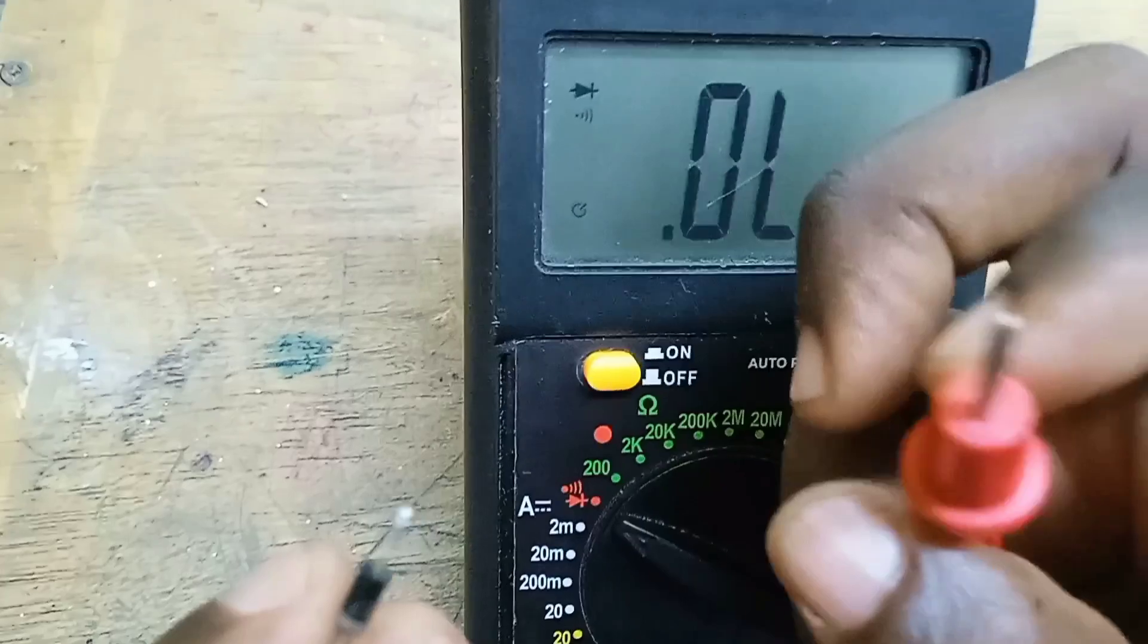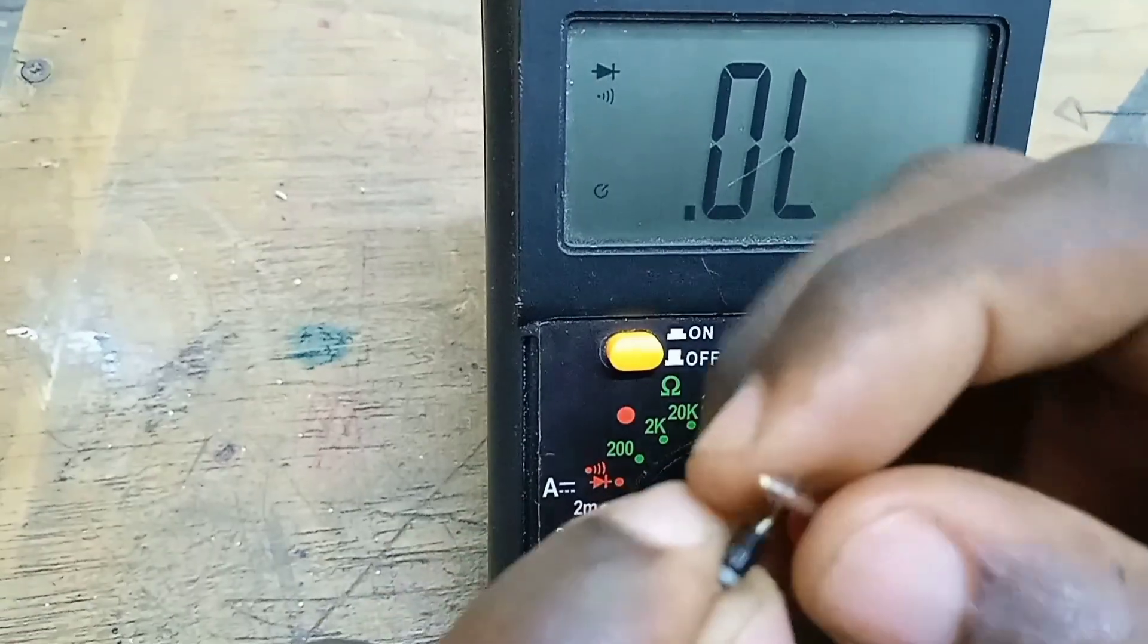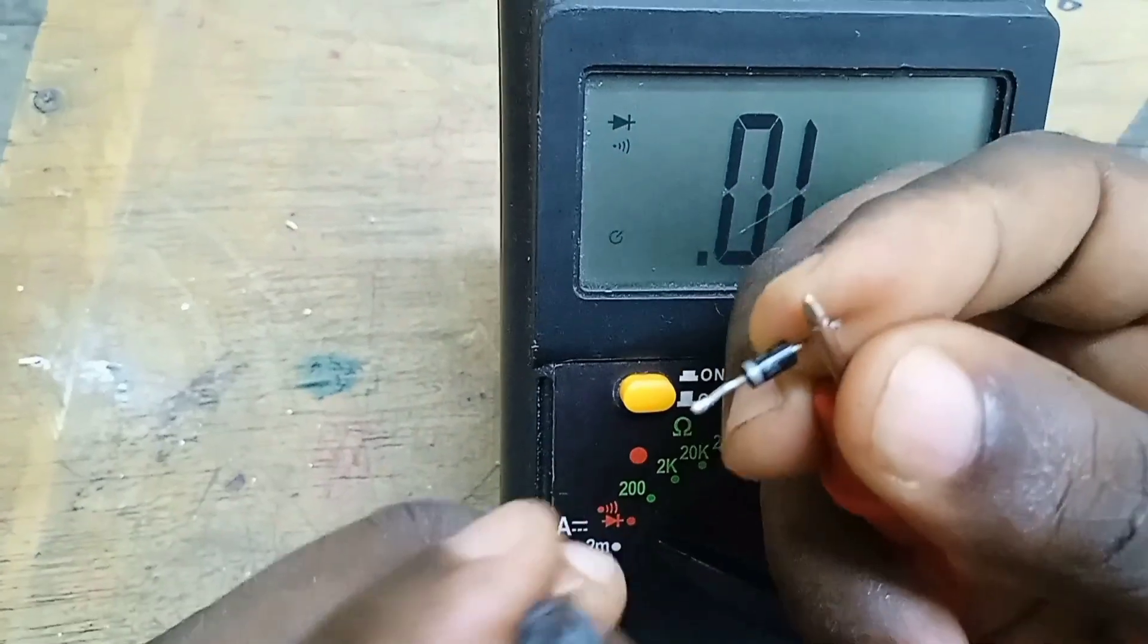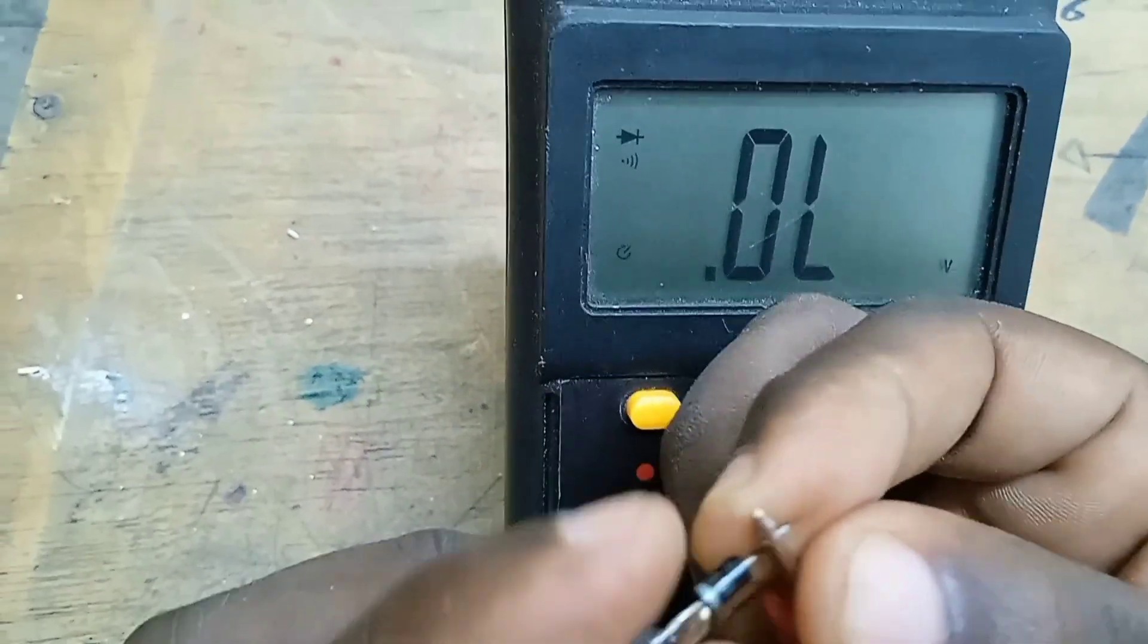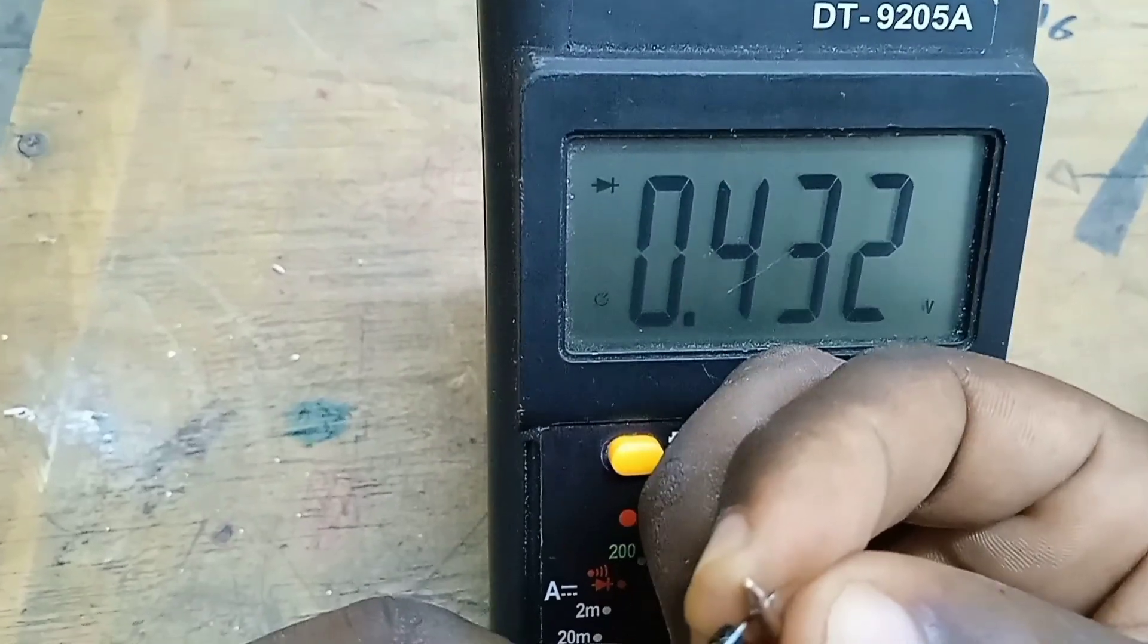Connect the positive terminal of your diode to the positive terminal of your multimeter, and the negative terminal of your diode to the negative terminal of your multimeter, and check the reading. The reading is 0.432.